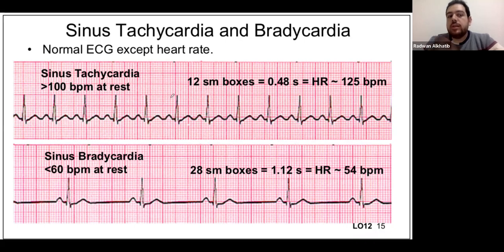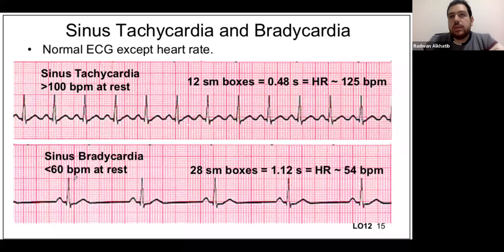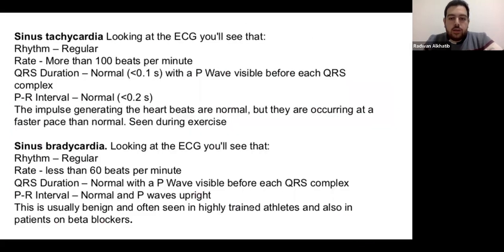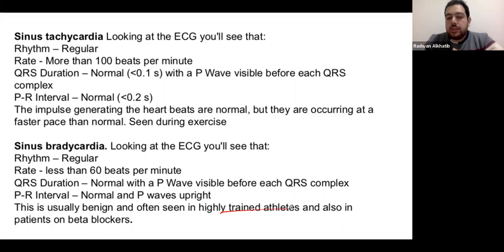Causes of sinus bradycardia include beta blockers, calcium channel blockers, and other cholinergic medications that slow down the SA node. It's often benign. It can be a normal variant in highly trained athletes — their hearts are so large that at rest a rate of 50-55 bpm is enough to supply the whole body, increasing only during exercise. People taking beta blockers also commonly have sinus bradycardia.